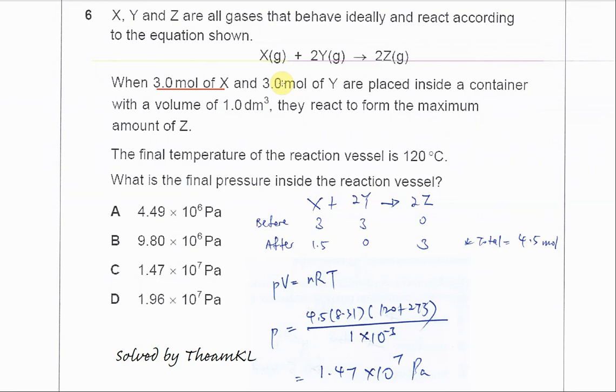In this question, one mole of X reacts with two moles of Y to form two moles of Z. It started with three moles of X and three moles of Y in a container with a volume of 1.0 dm³.